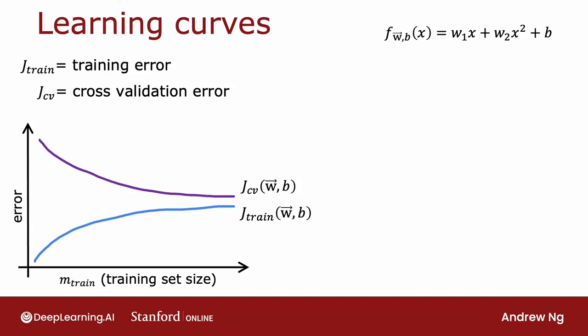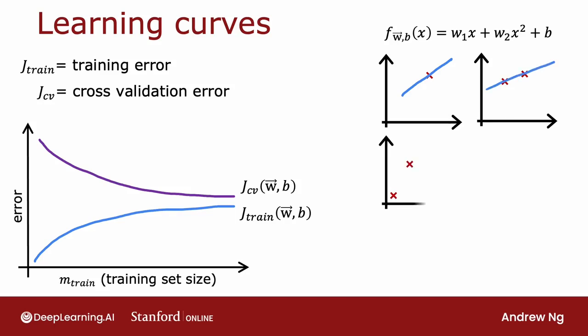Let's take a look at why this is the case. When you have just a single training example, if you were to fit a quadratic model to this, you can easily fit a straight line or a curve, and your training error will be zero. With two training examples, you can again fit a straight line and achieve zero training error. In fact, if you have three training examples, the quadratic function can still fit this very well and get pretty much zero training error. But if your training set gets a little bit bigger — say you have four training examples — then it gets a little bit harder to fit all four examples perfectly. And you may get a curve that fits it pretty well, but a little bit off in a few places. So when you have increased the training set size to four, the training error has actually gone up a little bit.